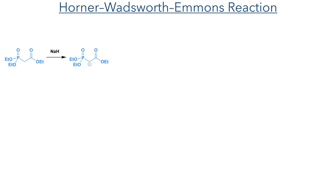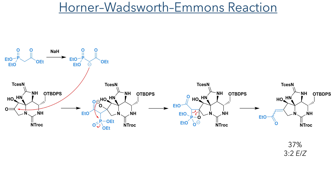With this ketone now in place, the authors set about functionalising it. This proved to be a difficult task, as the molecule was quite sensitive to base and did not react favourably using Wittig reagents or organometallic nucleophiles. The best reactivity was obtained using a Horner-Wadsworth-Emmons reaction. Triethyl phosphonoacetate was first deprotonated with sodium hydride and added to a solution of the ketone. In a mechanism similar to the Wittig reaction, it undergoes nucleophilic addition to the ketone, the oxygen attacks the phosphorus forming a four-membered oxaphosphetane intermediate, which then eliminates the phosphate, producing the alpha-beta unsaturated ester in a 37% yield with a 3:2 E to Z ratio.